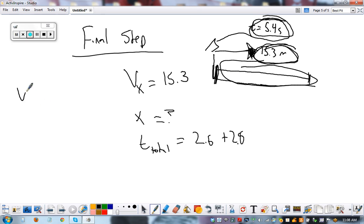Velocity in the x equals displacement over time. 15.3 equals we don't know over 5.4. We're going to bring it up here. 5.4 times 15.3 equals velocity in the x. Total distance is 82.6 meters. Congratulations.